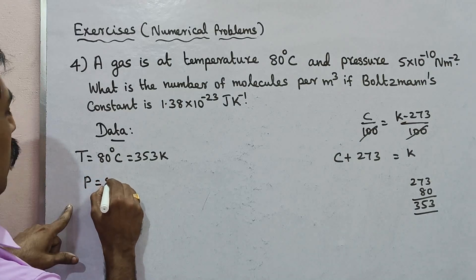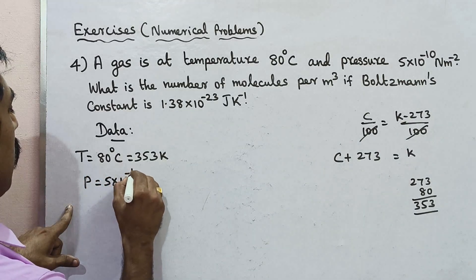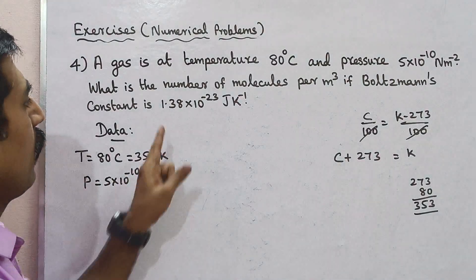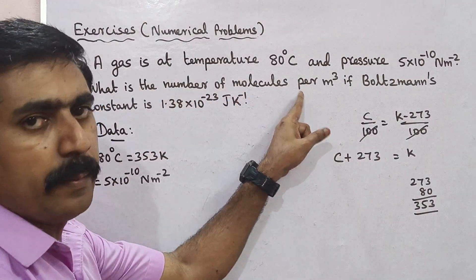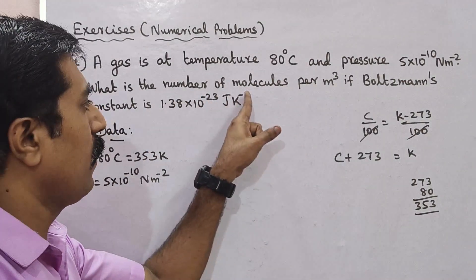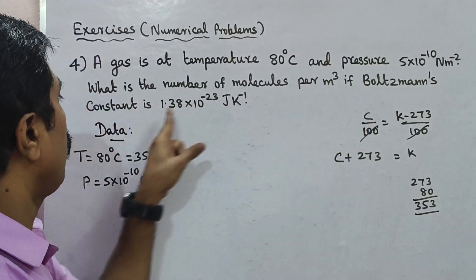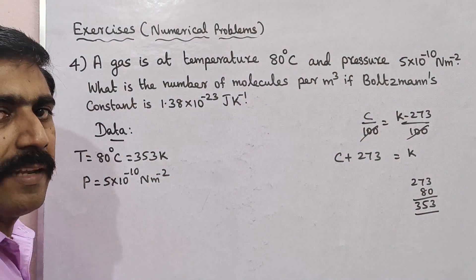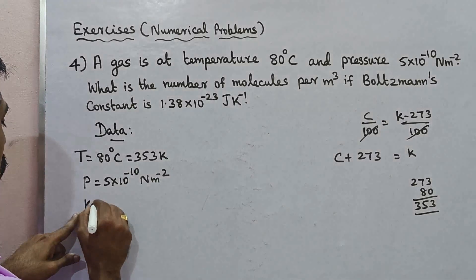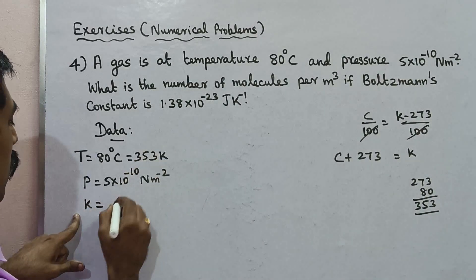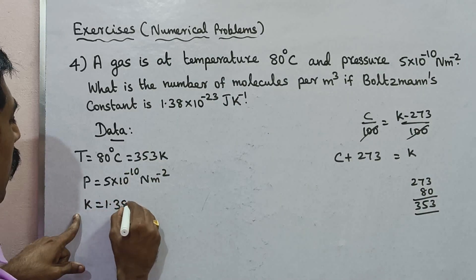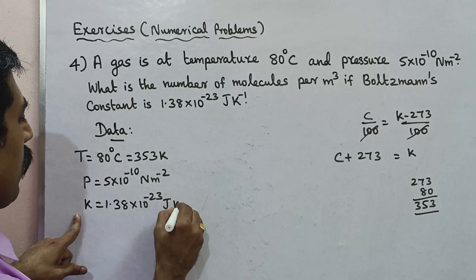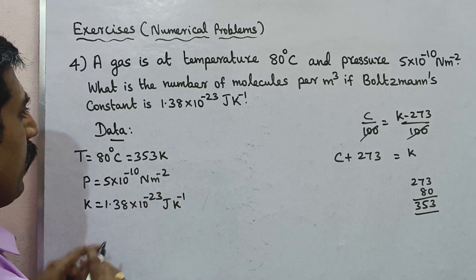Pressure P is equal to 5 into 10 power minus 10 Newton meter power minus 2. Boltzmann constant, notation K, is equal to 1.38 into 10 power minus 23 joule Kelvin power minus 1.